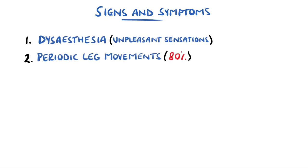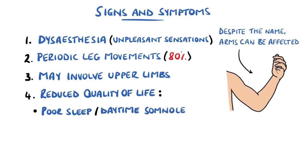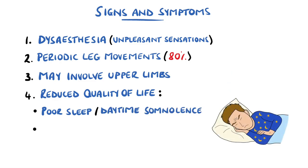Although the name states legs, it can also affect the arms. Depending on severity, this can mean a reduced quality of life, including poor sleep, leading to daytime somnolence, which can affect concentration as well as performance in work or school.